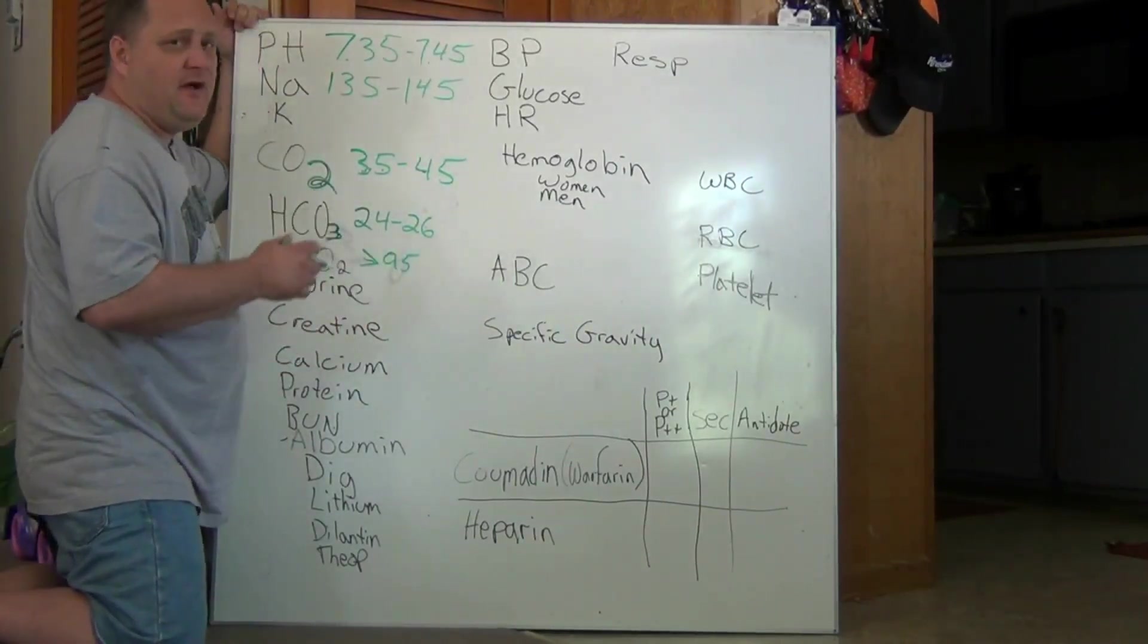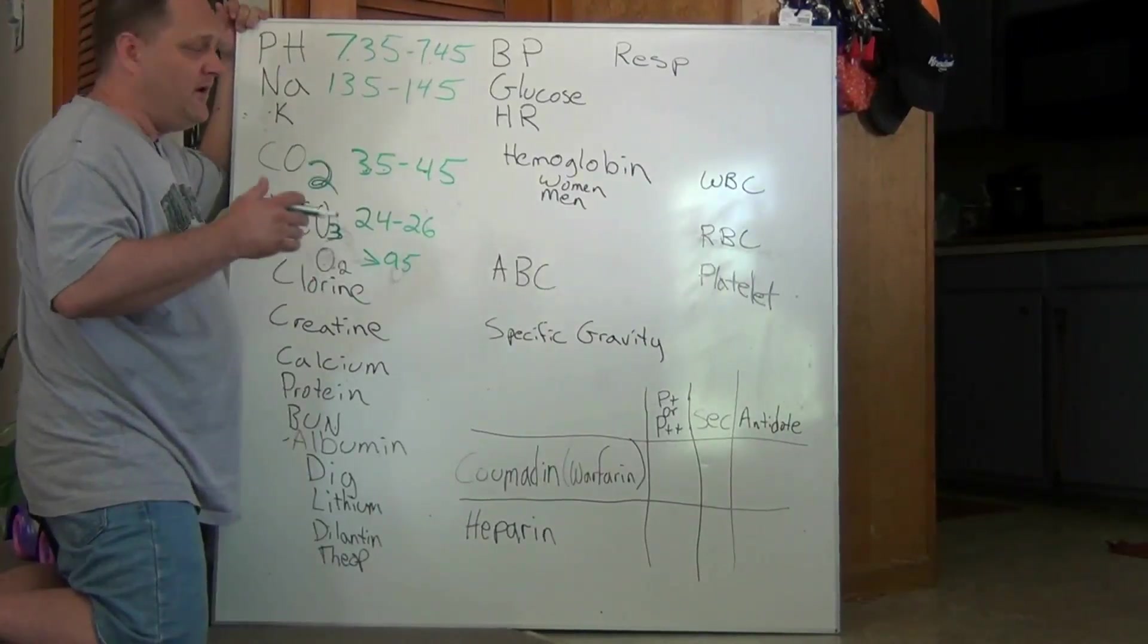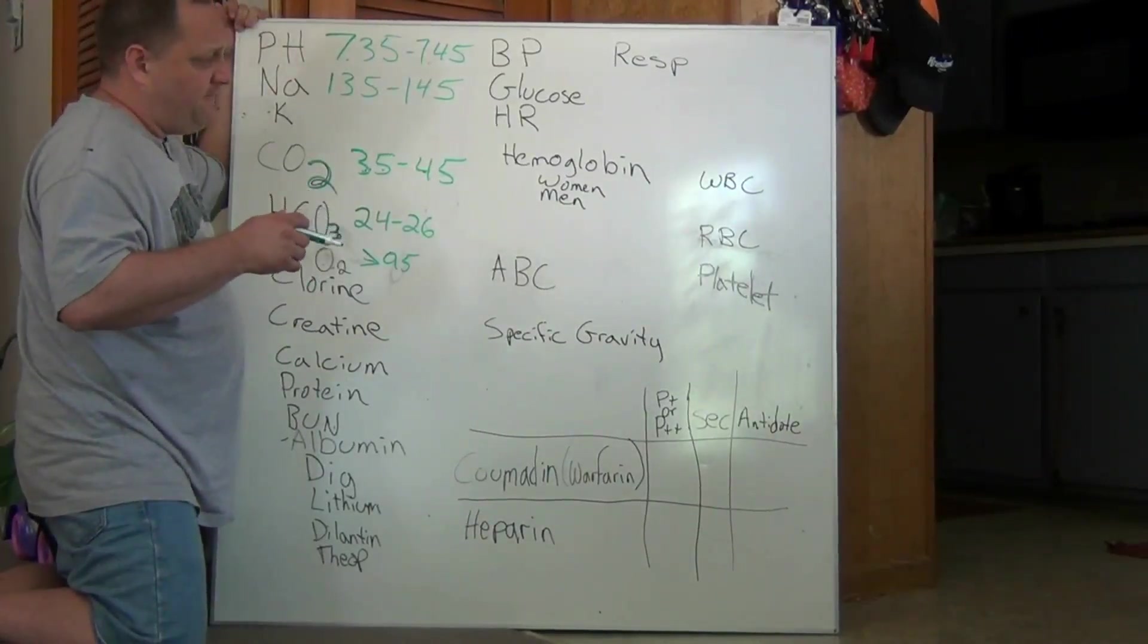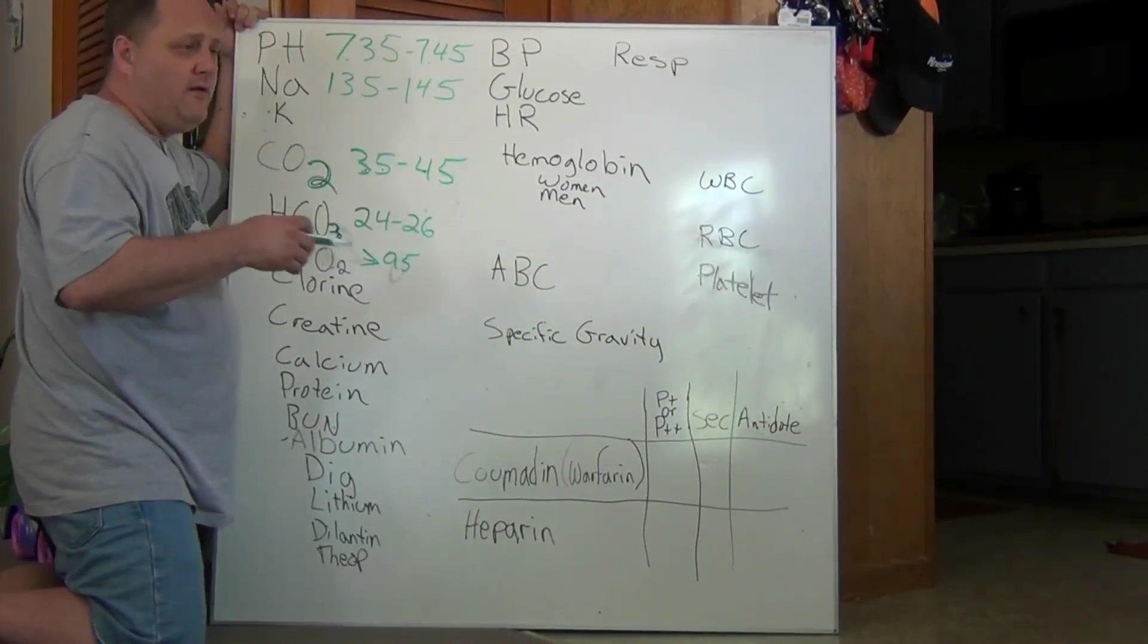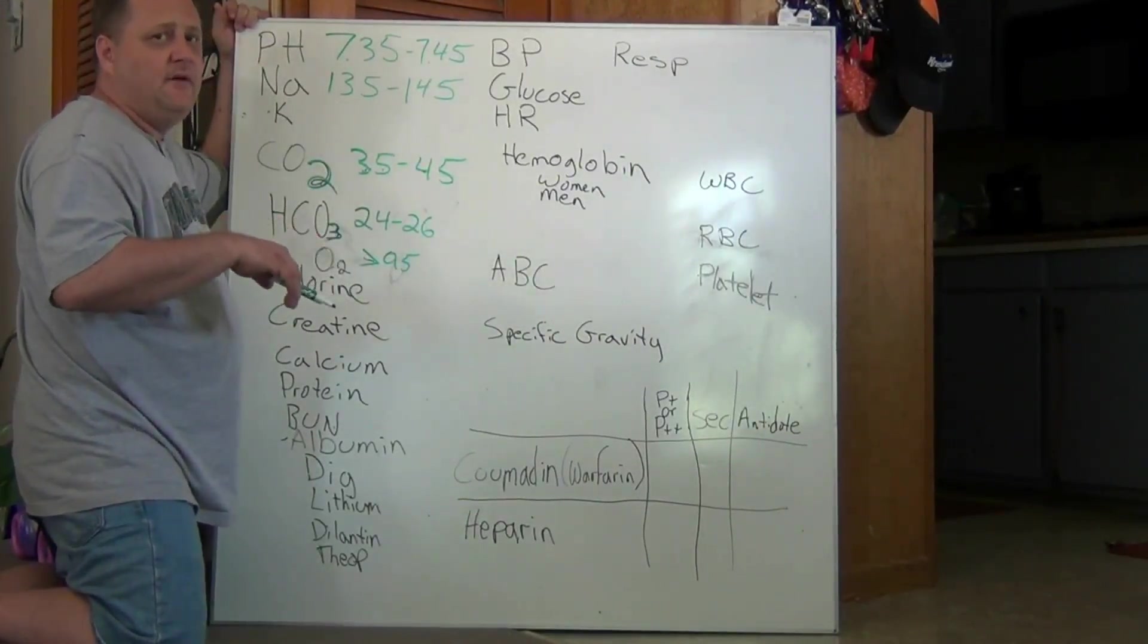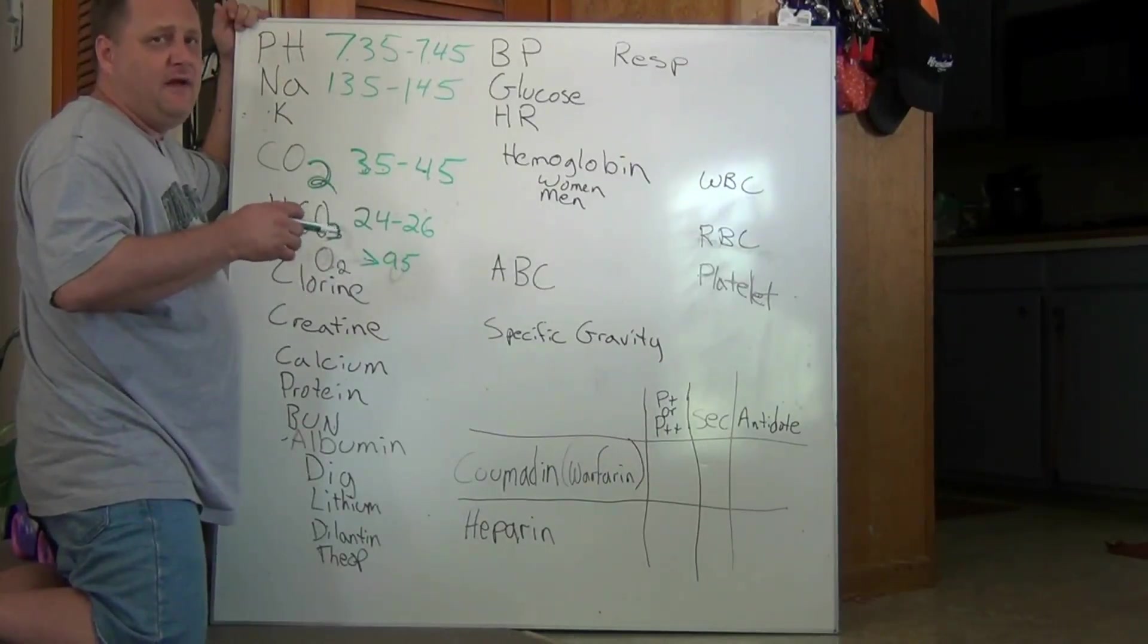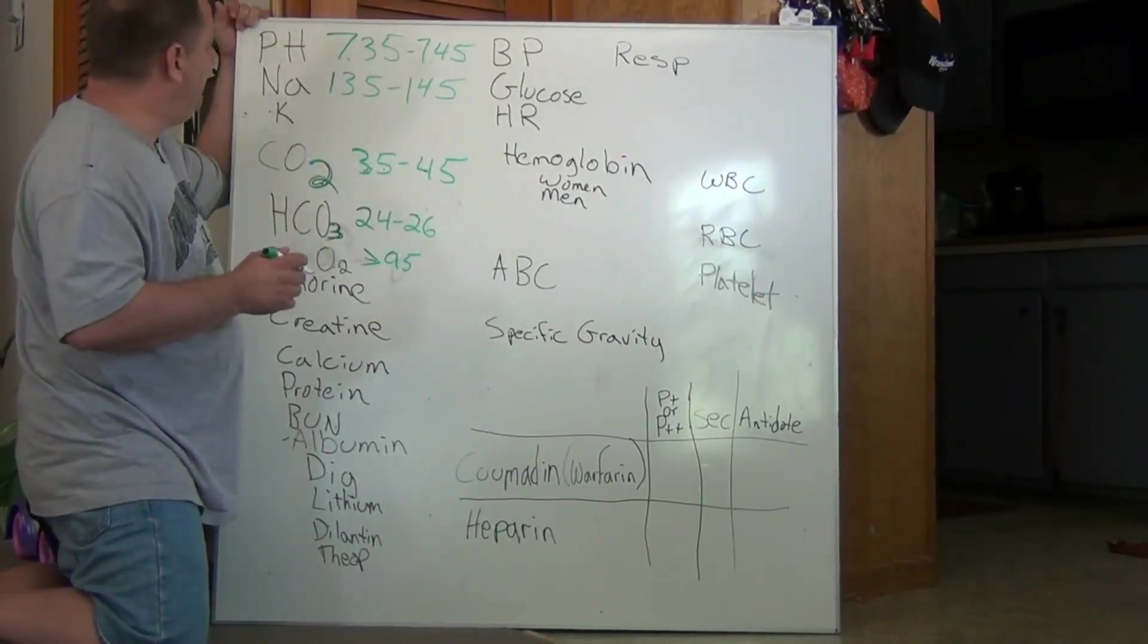Some of these values may be off depending upon the book you read, but remember that we're just looking for a ballpark figure because on the NCLEX, one of those values will be way off and then we'll know to select that that value is the wrong lab value.